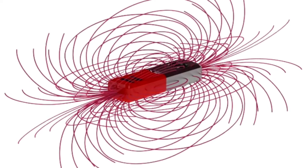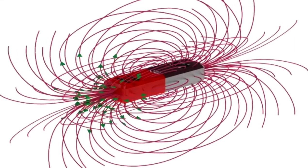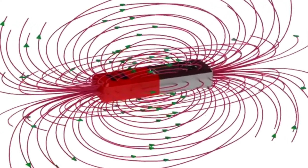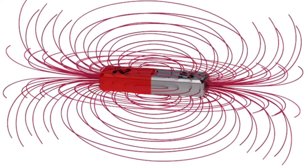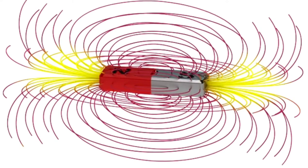These lines of flux leave the north pole of a magnet, loop around, and enter on the south pole. Where the lines of flux are more dense, for example near the poles of the magnet, the magnetic field is strongest.